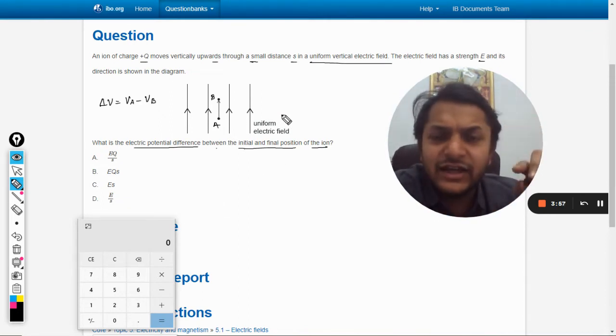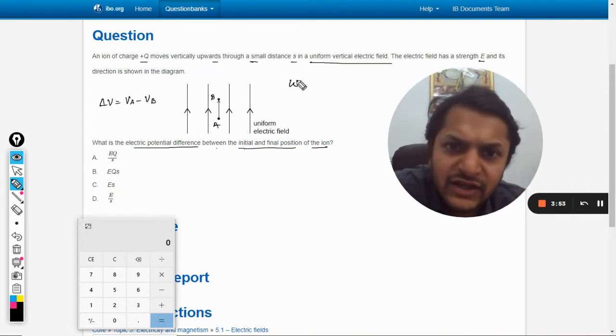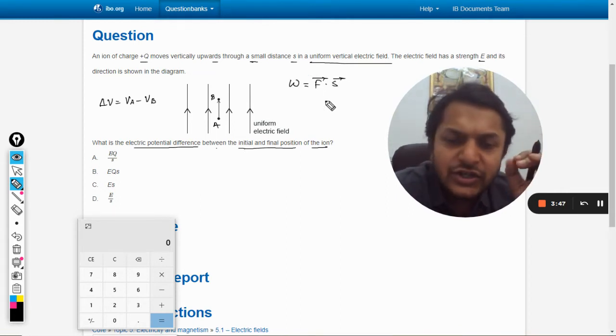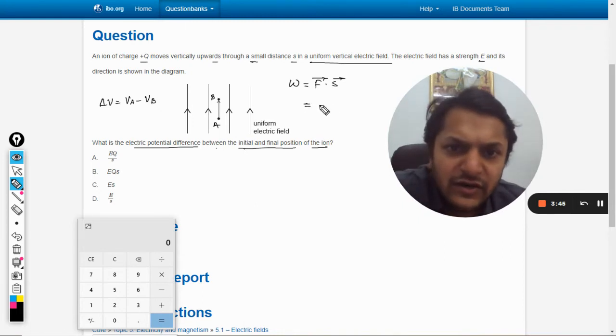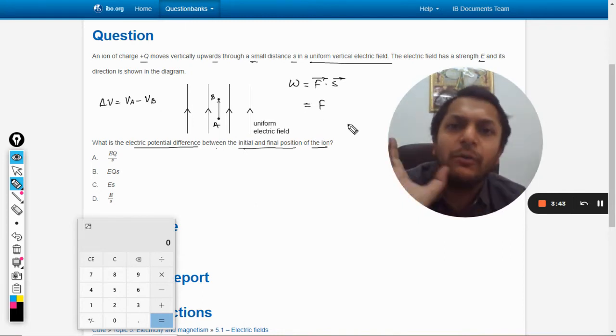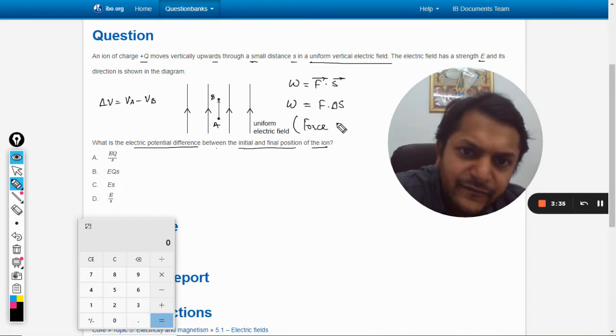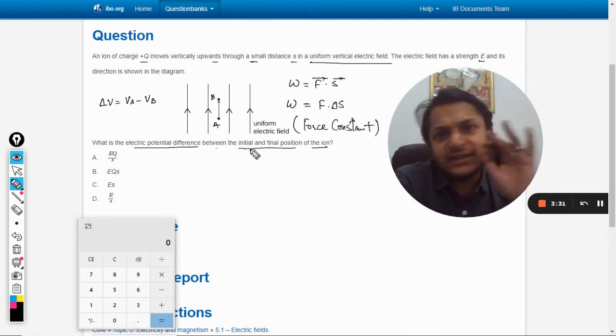From our 11th standard in work energy chapter kinematics, we have done this thing that work is given by F dot s displacement. So in simple terms, if the force is uniform, I can say that it is F into delta s. And the condition for this is force is constant or uniform.